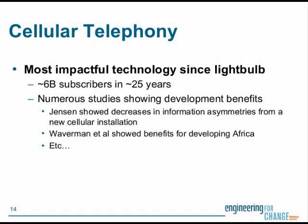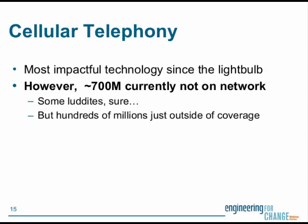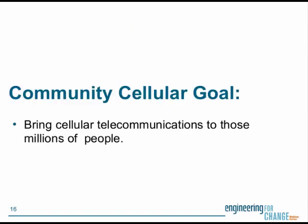There are studies that show why cell phones are so important. Jensen, an economist at UCLA, showed how bringing cell phones to an area removes information asymmetries and makes things more efficient. Waverman has a study arguing that an increase in cell phone adoption directly increases GDP. And communication is a basic human need — you'll see that everywhere in the world. But if you do the math, 6 billion subscribers is not quite the population of the Earth, so there are at least 700 million people who are just not in areas with coverage. The goal of our project at Berkeley is to bring cell telecommunications to those remaining people.